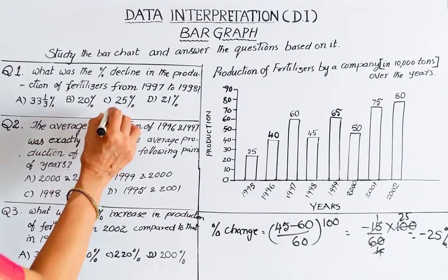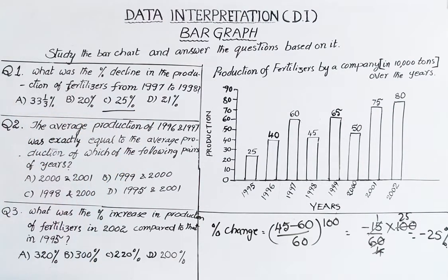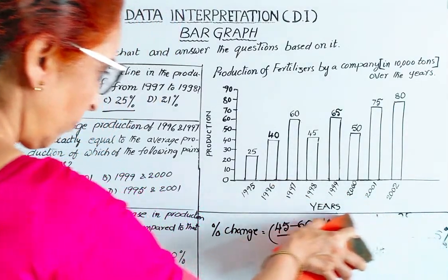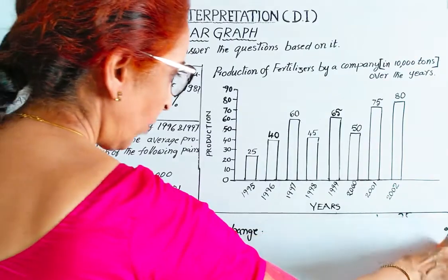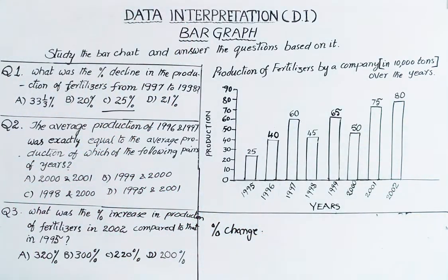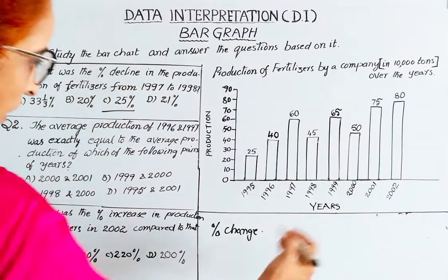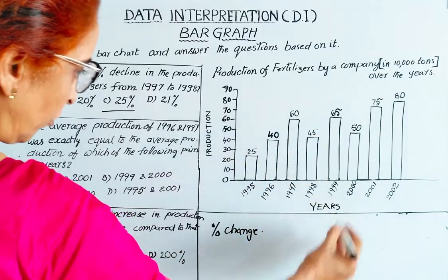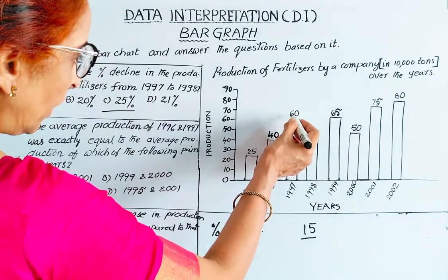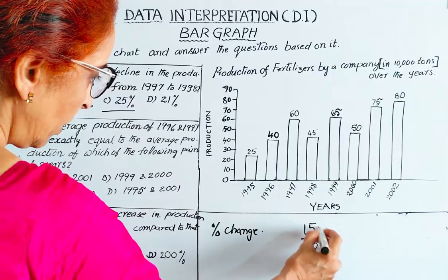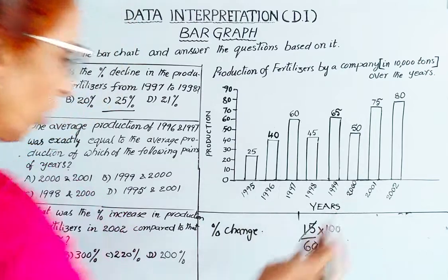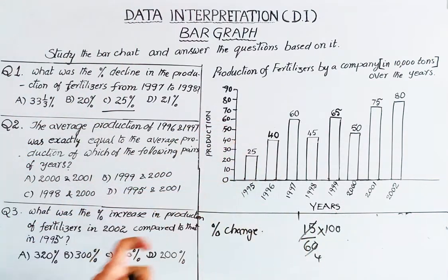So the answer is option C, 25% decline. To confirm: 1997 is 60, 1998 is 45, difference is 15. 15 by 60 into 100 — since 15 over 60 is one-quarter, and 100 by 4 is 25 — the percentage decline is 25%. This is our data interpretation answer.